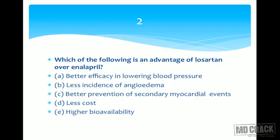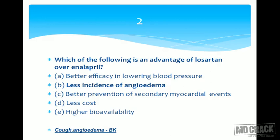The key difference is that ACE inhibition causes accumulation of bradykinin. Bradykinin accumulation aids vasodilation but causes dry cough and angioedema. Losartan does not act on angiotensin converting enzyme, so it does not cause bradykinin accumulation. The answer is less incidence of angioedema. Note: less incidence of dry cough would also be a valid advantage of losartan over enalapril.